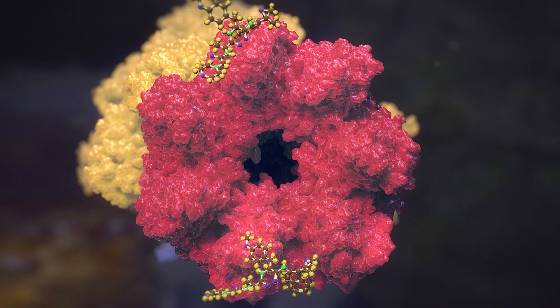KZR-616 is a first-in-class, selective inhibitor of the immunoproteasome with primary potency against LMP7 and LMP2.